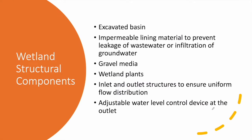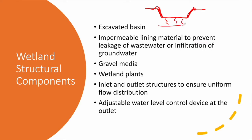The structural components of a wetland are simple. We need to excavate a basin that is sloped at the bottom. We then place an impermeable lining material — a geotextile and an HDPE membrane — which prevents leakage of wastewater and infiltration into the groundwater beneath the wetland.